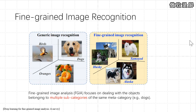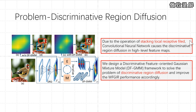However, all the previous works try to find discriminative regions and patches from high-level feature maps directly, and neglect that the high-level feature maps are constructed by fusing both spatial and channel-wise information within local receptive fields in CNN.